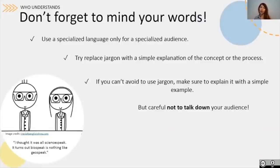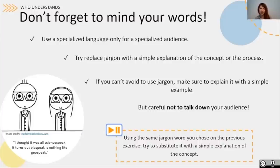Try to use specialized language only for a specialized audience. Replace jargon when possible with a simple explanation of the concept or process. If you can't avoid using jargon, please make sure you accompany that word with a simple example. But at the same time, do not talk down your audience — they are still knowledgeable people. Using the same jargon word you chose in the previous exercise, now try to substitute it with a simple explanation of the concept behind it.